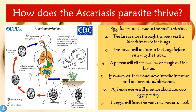The eggs hatch into larvae in the host's intestines. The larvae move through the body via the bloodstream to the lungs, where they mature before entering the throat. The person will either swallow or cough out the larvae. If swallowed, the larvae move into the intestine and mature into adult worms. Female worms can produce about 200,000 eggs per day, and these eggs leave the body through the feces, where they can contaminate soil again.